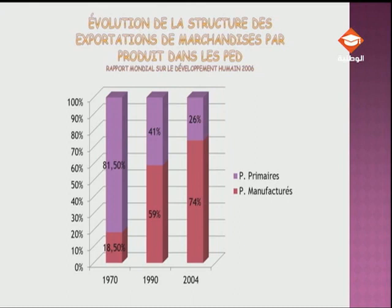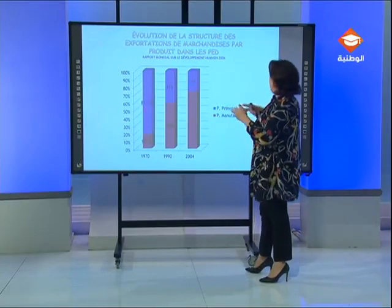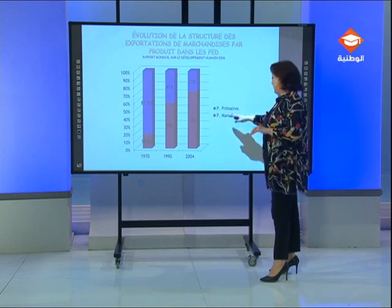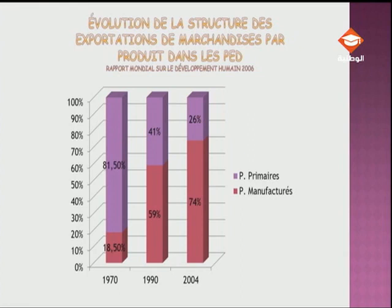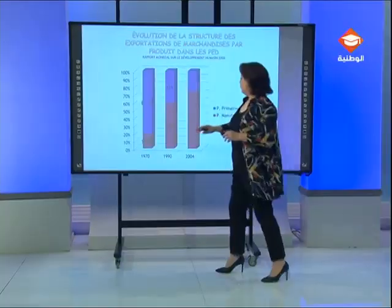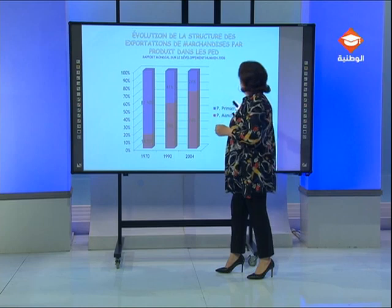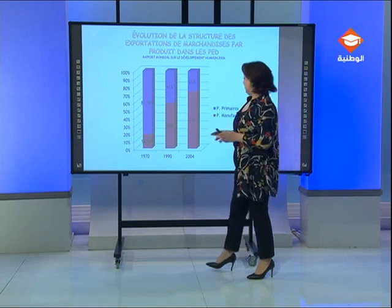Un autre document, cette fois-ci un graphique — un histogramme empilé où les données sont superposées — traite de l'évolution de la structure des exportations de marchandises par produit dans les PED. Il donne une idée sur la participation des PED dans les exportations mondiales de marchandises, réparties en deux types de produits exportés : les produits primaires et les produits manufacturés. Chaque type de produit correspond à une couleur, et on peut lire la part de chaque type dans les exportations totales de marchandises pour une même année.